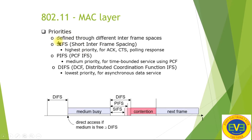Priorities are defined through different interframe spaces. SIFS (Short Interframe Spacing) has the highest priority — used for acknowledgements, CTS, and polling responses. PIFS has medium priority for time-bound services using PCF. DIFS has the lowest priority for asynchronous data services.